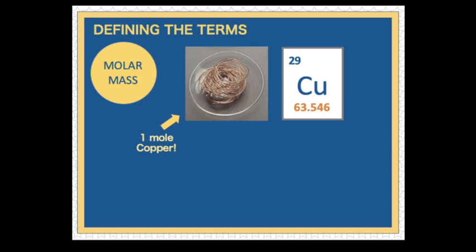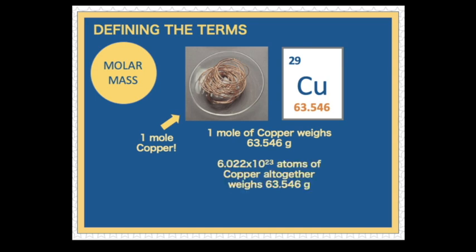Another example. This is a sample of 1 mole of copper. 1 mole of copper weighs 63.546 grams. That means, 6.022 times 10 raised to the 23rd power atoms of copper altogether weighs 63.546 grams. That means, the molar mass of copper is 63.546 grams per mole.